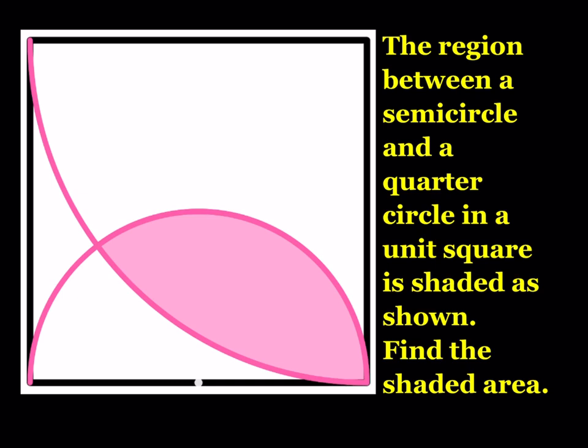We have a semicircle and a quarter circle that intersect inside a unit square, and they form a region as shown. We're going to find the shaded area. To find the shaded area, we first need to find where these curves intersect — that's an important point.